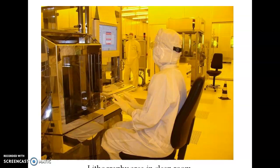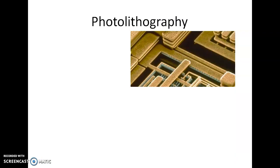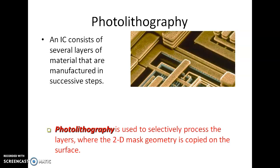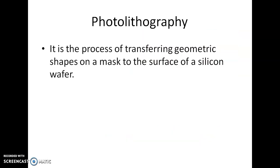In the same way, when the geometric pattern is prepared, we can reproduce it onto the wafers any number of times. Whenever we use light for that purpose, we call it photolithography — it is the art of writing using a light source. We can see here that photolithography takes place in a very clean environment, because any contamination on the mask or wafer will degrade further steps. Photolithography is used to selectively process layers where the 2D mask geometry is copied onto the surface. The definition: it is the process of transferring geometric shapes on a mask to the surface of a silicon wafer.